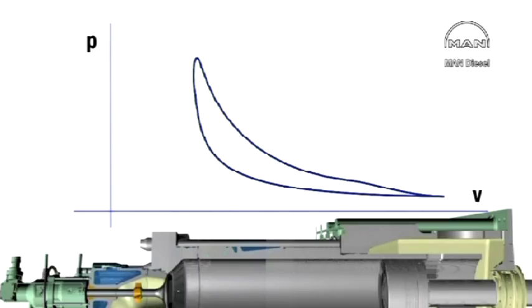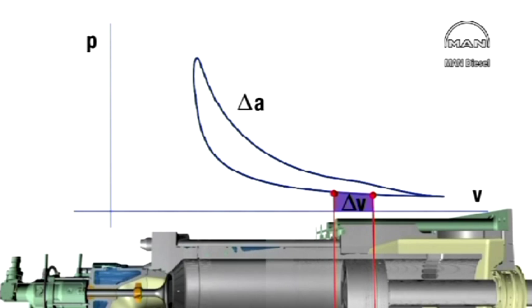From the indicator diagram, the so-called indicated output can now be computed. At any given piston position during the compression stroke, there's a certain pressure, P, acting on the piston top. If the piston travels a short distance further, corresponding to delta V, and if we ignore the minimal change in pressure, the amount of work done, delta A, will be given by the pressure multiplied by the change in volume, or P times area below the part of the compression line corresponding to delta V.